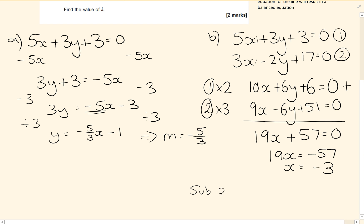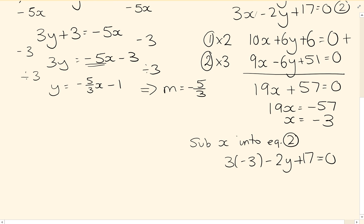So subbing x into, let's say, equation 2, I've got 3 lots of minus 3 minus 2y plus 17 equals 0. So minus 9 minus 2y plus 17 equals 0.